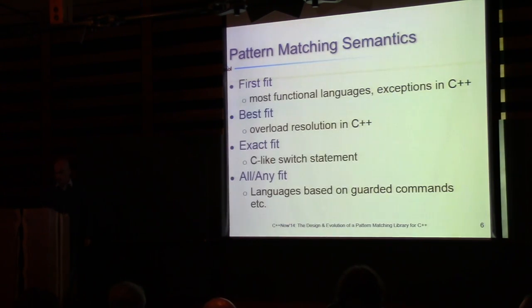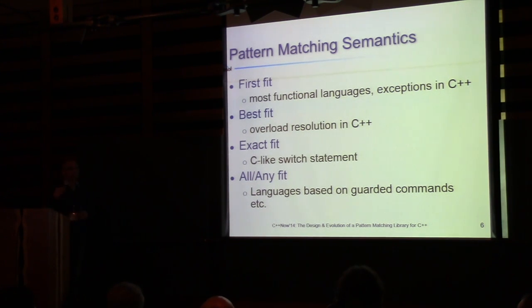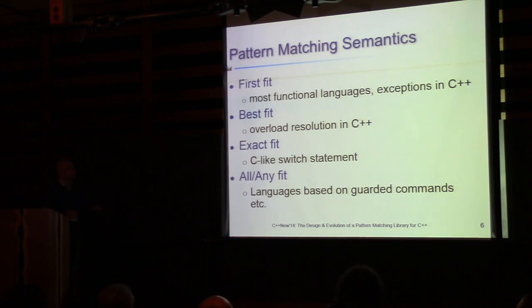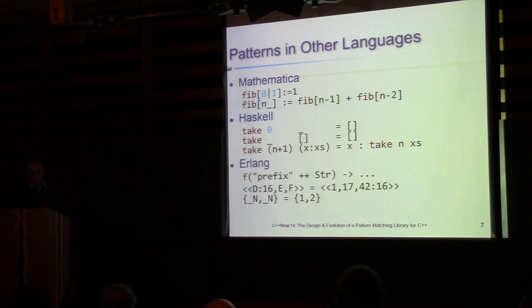Different languages have different semantics for pattern matching. Typically, mostly functional languages have first-fit semantics. In C++, we don't give preference to what we've seen first, so it's usually best fit. C-like switch statements and similar constructs use what we call exact fit. Some other languages may have all-fit or any-fit, which can be deterministic or non-deterministic, et cetera.